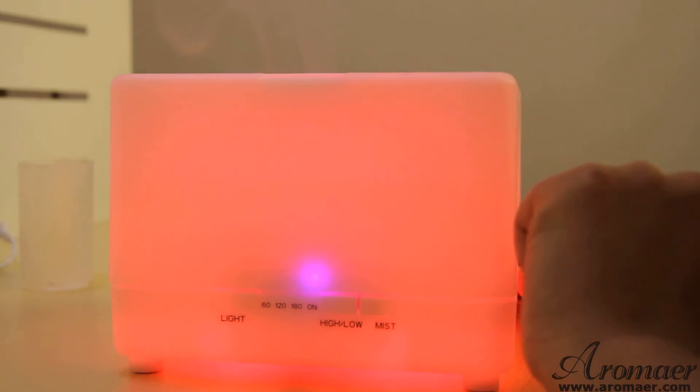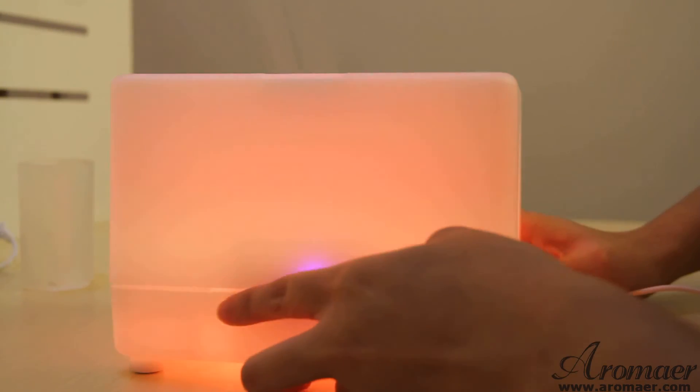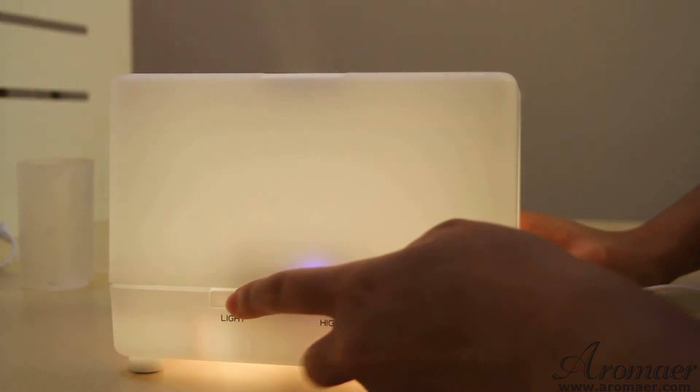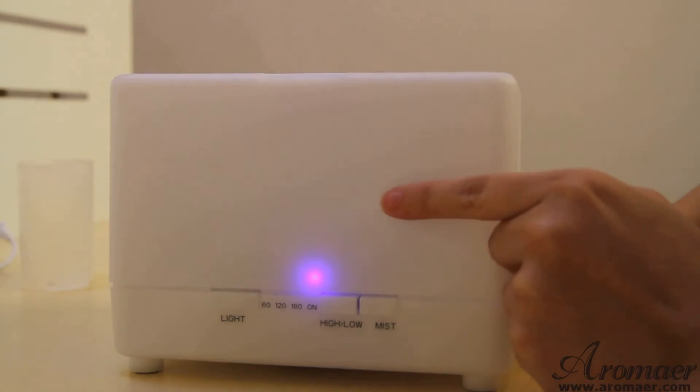And if you want to turn off the light, you don't really like the light, you just press the light button for 3 seconds like this. 1, 2, 3 and the light will be off.